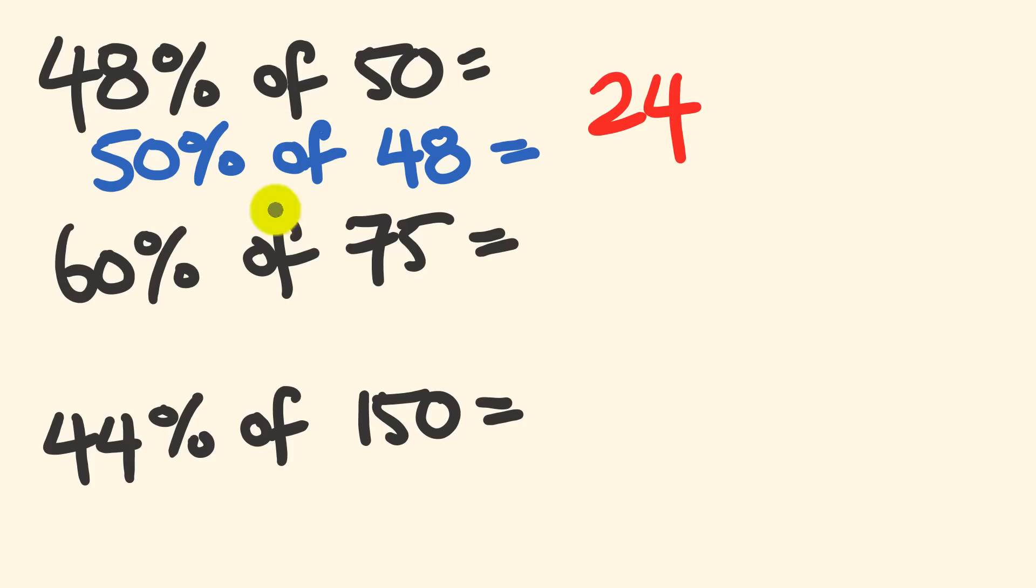Okay, the next question, 60% of 75. Okay, so let's flip that around. Maybe you don't mind 60% of 75, but let's try 75% of 60. Okay, so 75% is the same as three quarters. Not a bad one to know. So if you know three quarters, what's one quarter of 60? One quarter of 60 is 15. So three lots of 15, three quarters of 60, the answer is going to be 45. How'd you go on that one?